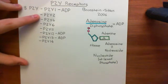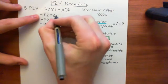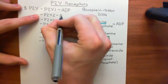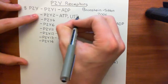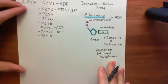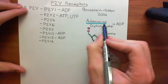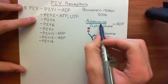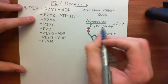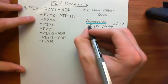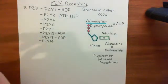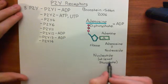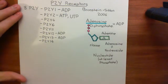Moving on to P2Y2 — this has slightly more complicated ligand binding. It has two ligands that can activate it: it can either be activated by ATP (adenosine triphosphate), or by UTP (uridine triphosphate). ATP should be easy to understand: it's adenosine triphosphate. All you do to the ADP molecule to turn it into ATP is add on a further phosphate group, taking the total number of phosphates up to three. ATP is also a nucleotide, but with three phosphate groups rather than two.